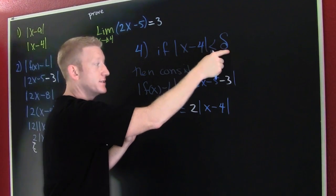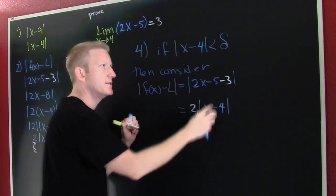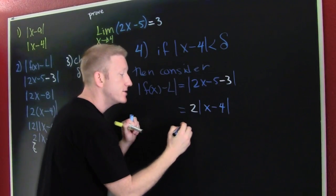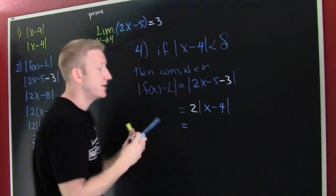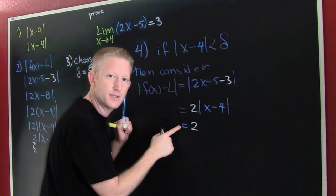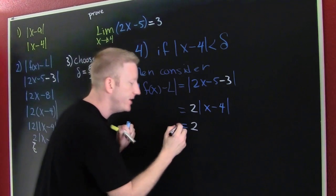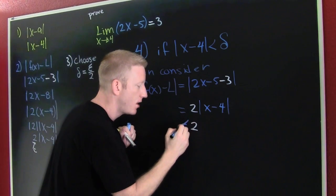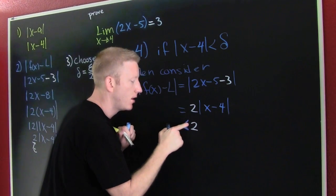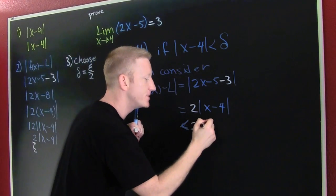Now notice what we've done. We said if this is smaller than that, then we considered this. But wait a minute, this is smaller than delta. So then this is gonna be 2 times - whoa. If this is smaller than delta, then this is smaller than 2 times delta.